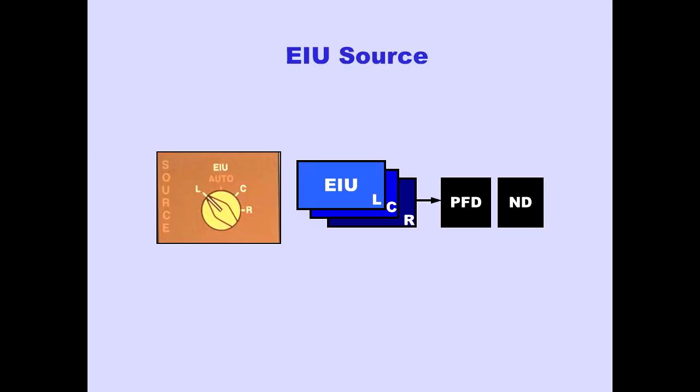The EIU source selector is used to select which EICAS interface unit is providing processed airplane systems information to the PFD and ND. The left, center, or right EIU can be selected.